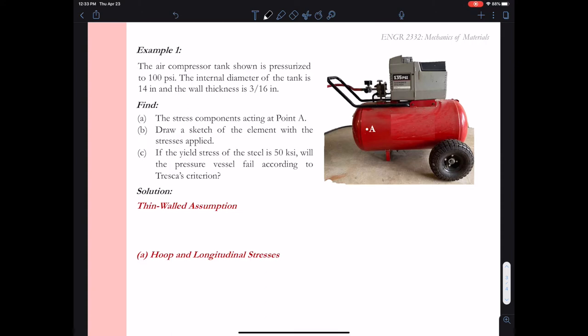The first thing we should do when we deal with pressure vessels is see if we can use thin-walled analysis. The thin-walled analysis considers the inner radius over the thickness. For this particular problem, the inner radius is the diameter divided by 2, so 14 inches divided by 2, and the thickness of the wall is 3/16ths of an inch.